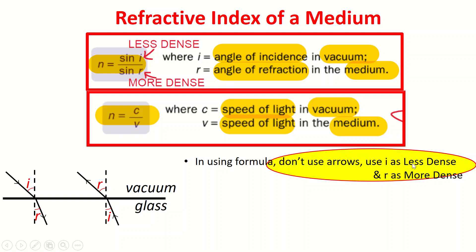You basically need to make sure your i is always the angle in the less dense medium and r in the more dense medium. This is i over r which is why in the formula we put it here, it's always angle of incidence in the less dense media and r is in the more dense medium.